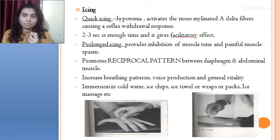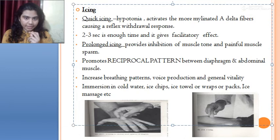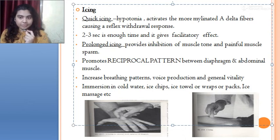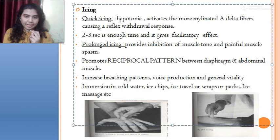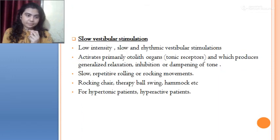Quick icing is used in cases of hypotonia; it activates myelinated type A-delta fibers causing a withdrawal response — two to three seconds is enough and it gives a facilitatory effect. Prolonged icing leads to inhibition of muscle tone and painful muscle spasms. It promotes a reciprocal pattern between the diaphragm and abdominal muscles, and is useful for respiratory rate control, improving breathing pattern, voice production, and general vitality. Immersion in cold water, ice chips, ice towels, or ice massage are examples. Quick icing is for hypotonia and prolonged icing is for hypertonia.